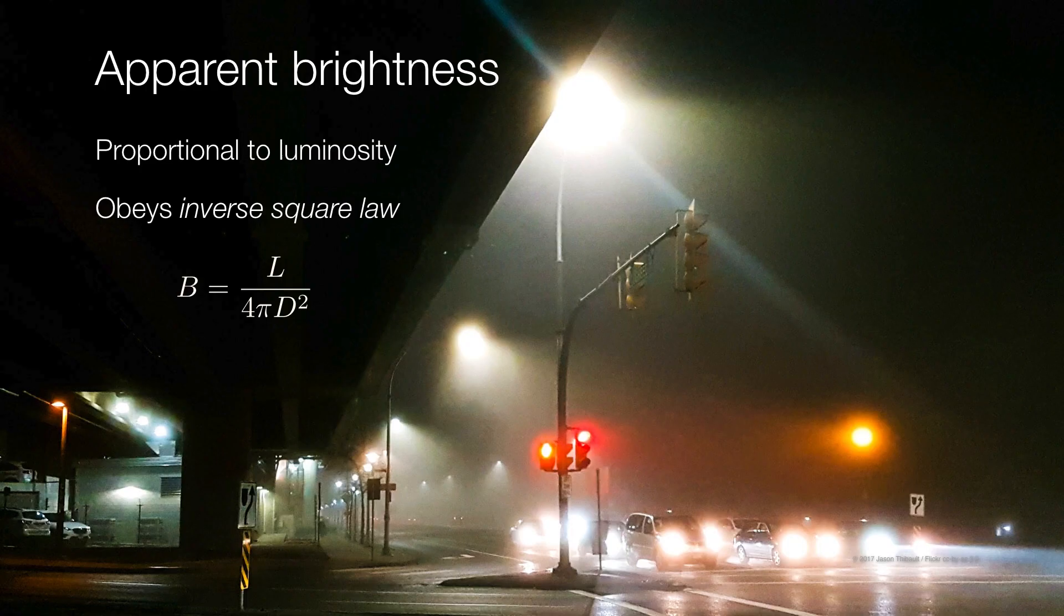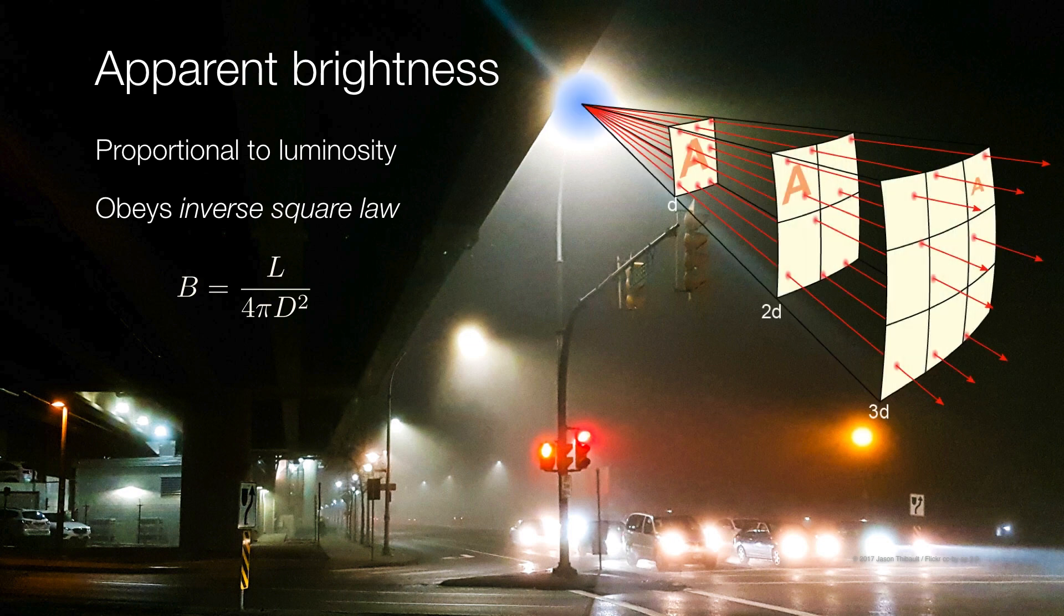Now, let's think about the apparent brightness of stars. Again, returning to our analogy, we know that all of the lamps in this image all have roughly the same luminosity, but the brightness obeys an inverse square law. That means the greater the distance, the lower the brightness.